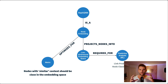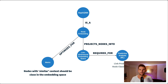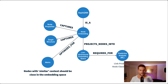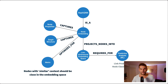Nodes which are similar in our graph should be close in the embedding space. 'Similar' is in quotes because it's not entirely clear what it means — every node embedding algorithm has to define how it captures node properties and how it captures the graph structure. If we use both of them they are most powerful.